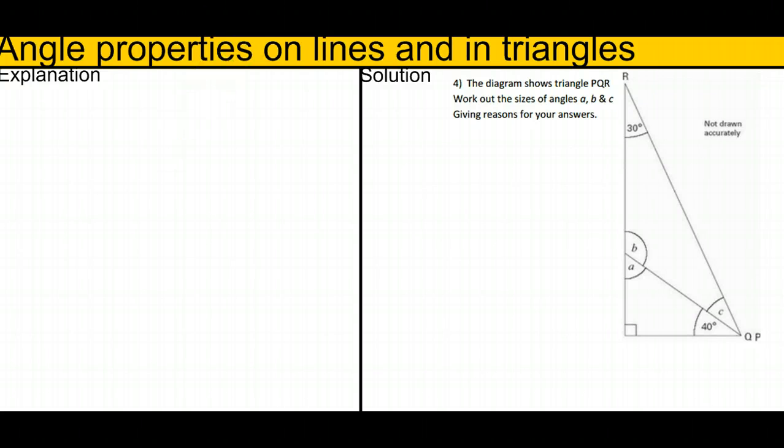We're looking at angle properties on lines and in triangles. I'm going to start with a straight line and have a look at what the properties are. A straight line represents half a turn because that angle there is 180 degrees.